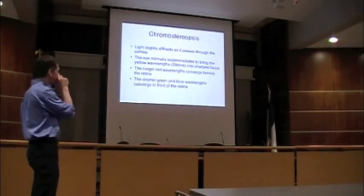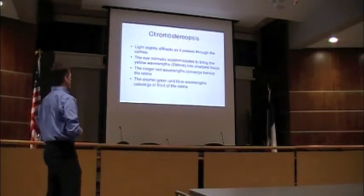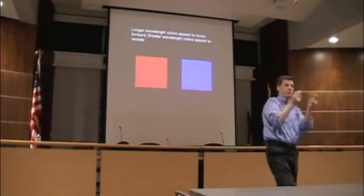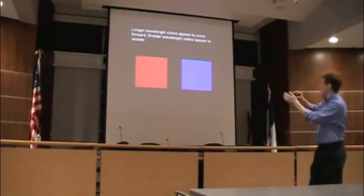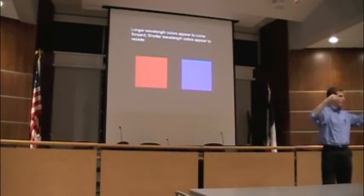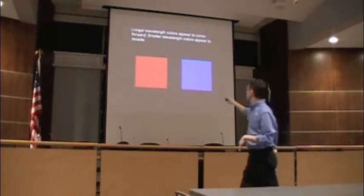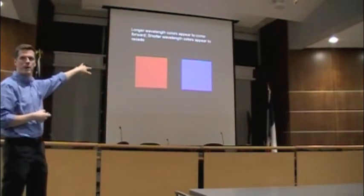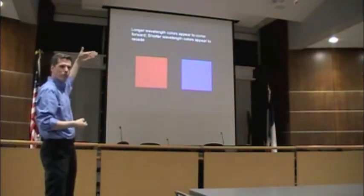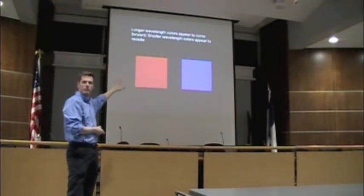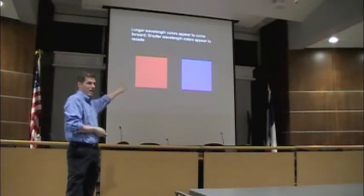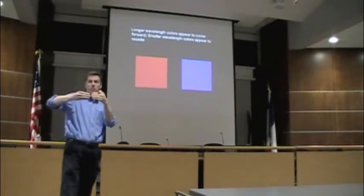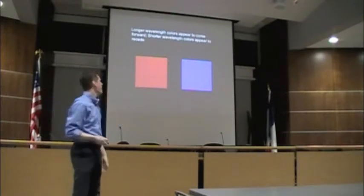Another color issue is chromostereopsis: different colors hit the back of your retina at different convergence points. Red and blue are on opposite ends of the spectrum — longer wavelengths appear to come forward while shorter wavelengths recede. So red seems to pop off the screen and blue fits inside the screen. If you use red and blue next to each other, you may create unintended depth perception — you don't want to do that, especially on slides.